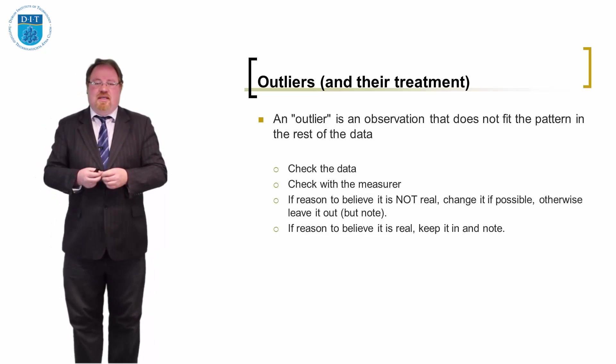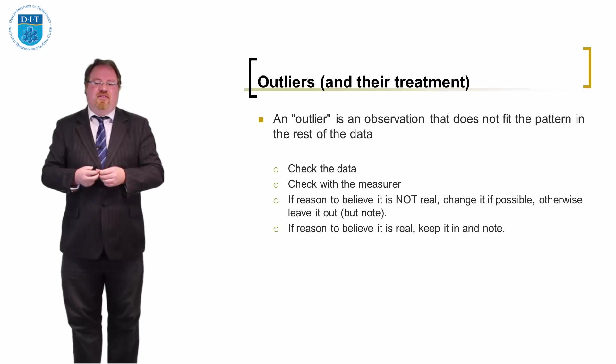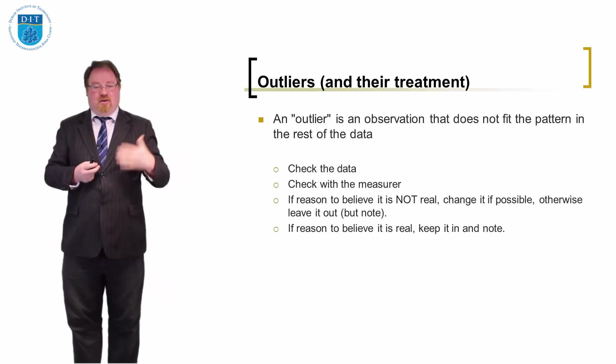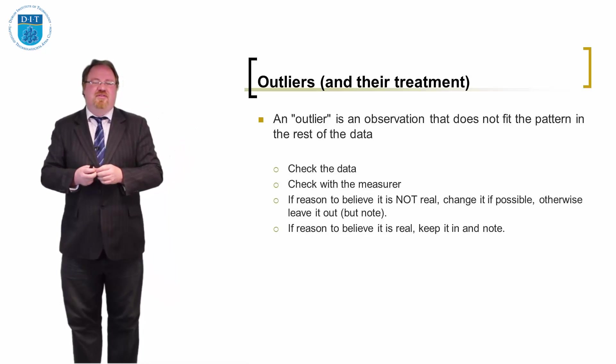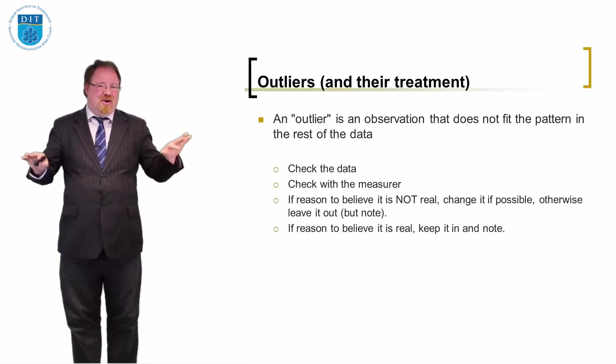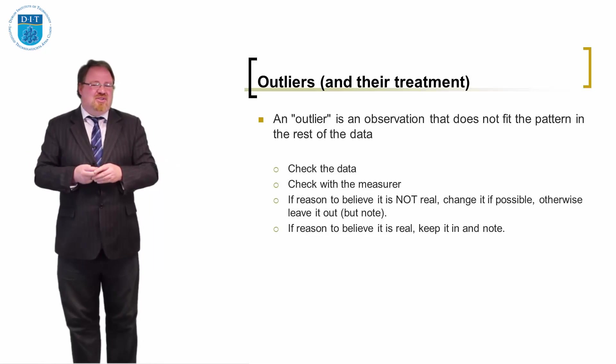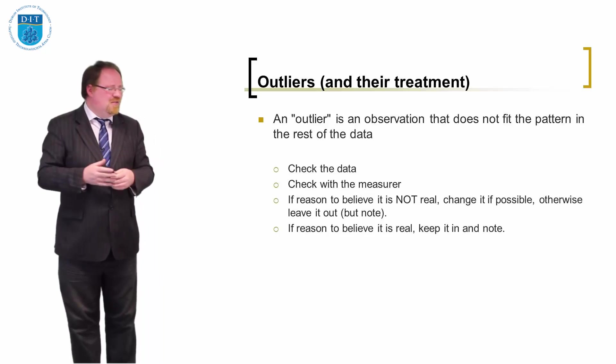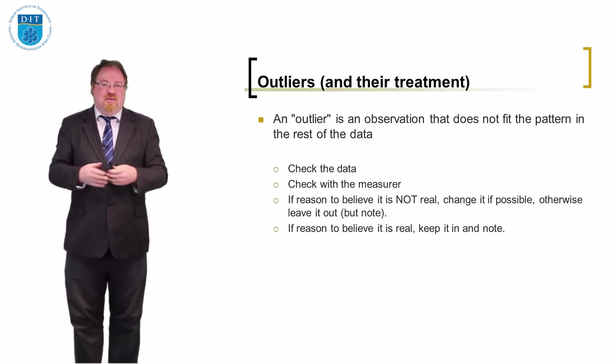If it's not a mistake and it is a legitimate part of the sample, then we really shouldn't take it out of the sample. For certain kinds of modelling, we can remove it and model the data and put it back in or comment that this outlier was removed. But typically, if it represents part of the dataset, we should always ensure it's there. Some statisticians think it's okay to remove outliers. Others don't. There's a little bit of debate about it.